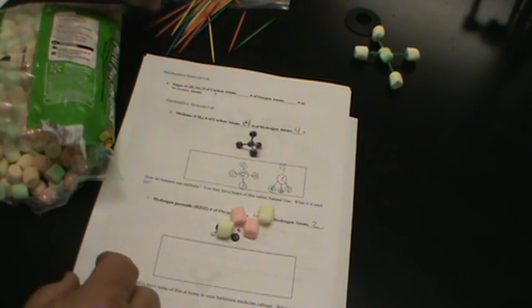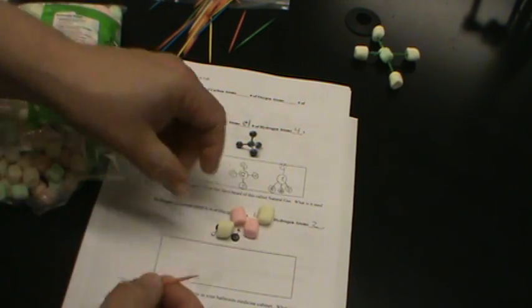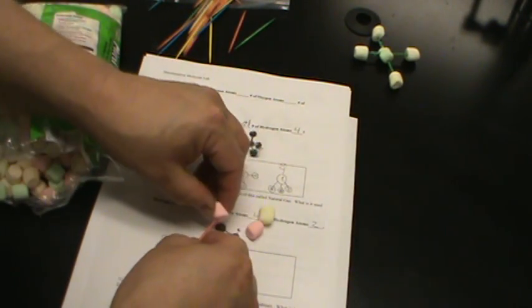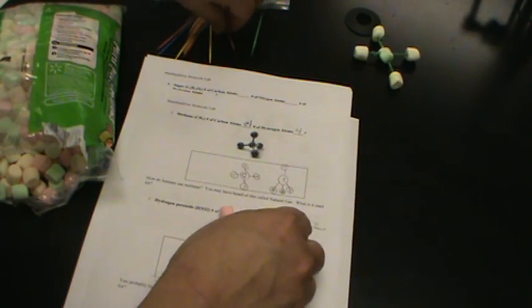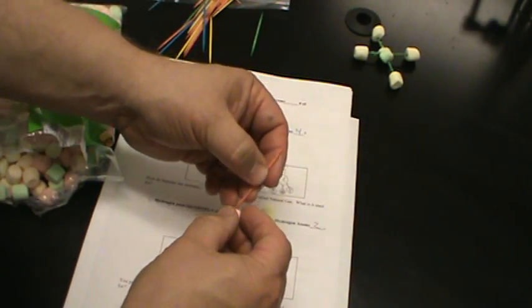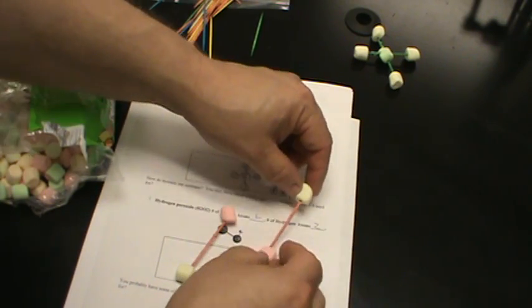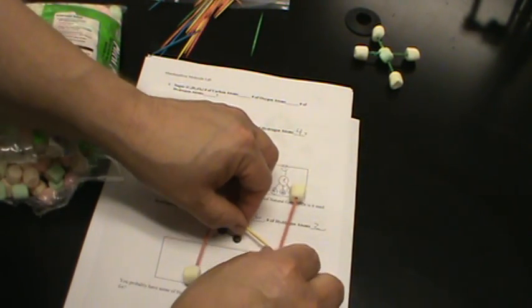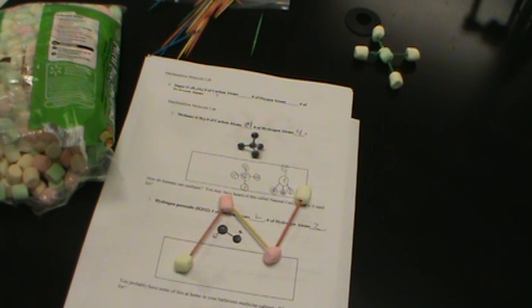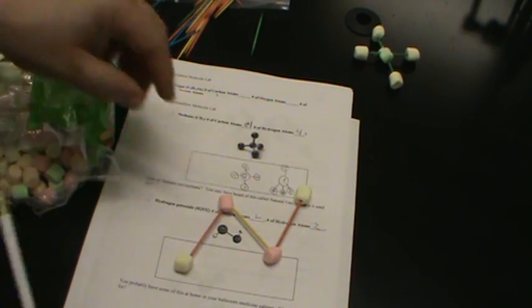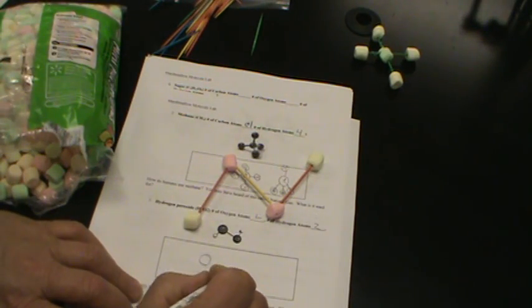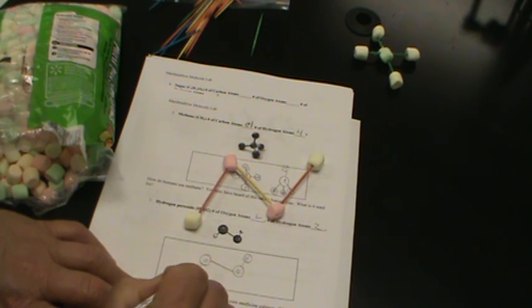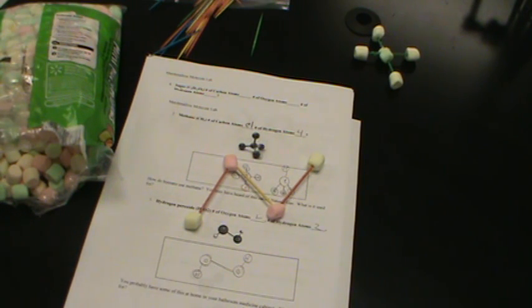But, of course, if you wanted to use the toothpicks, then what we would do is we would bond these together. And one of the things I was trying to tell the students, too, is to lay the marshmallows out before you start. And some of our students really, they want it to look perfect from the beginning, but they don't want to lay it out. So, there you go. There is a hydrogen peroxide molecule, two oxygens bonded. And here's our hydrogen, and there's our hydrogen. Hydrogen peroxide molecule.